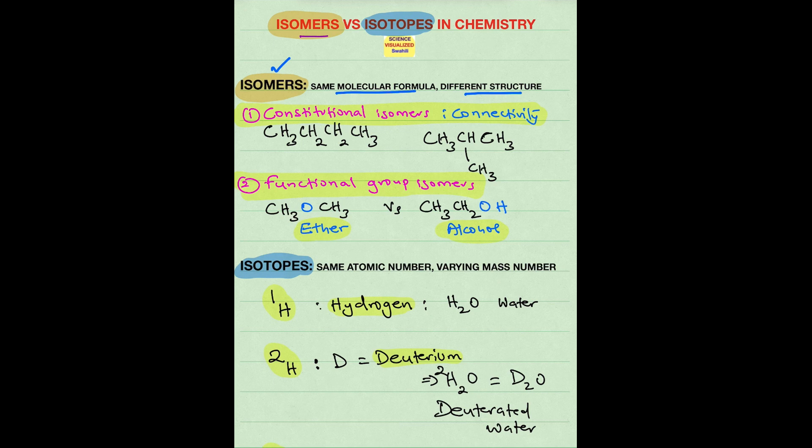The first one is called constitutional isomers. This is where the two molecules have the same molecular formula but different structures, and the difference is due to connectivity, how the atoms are connected.